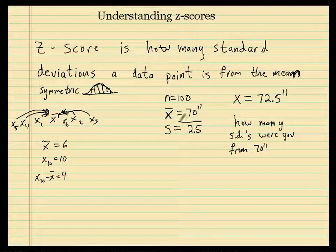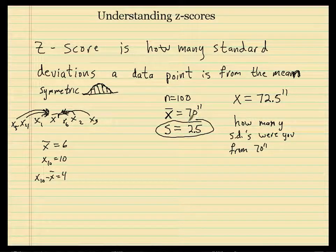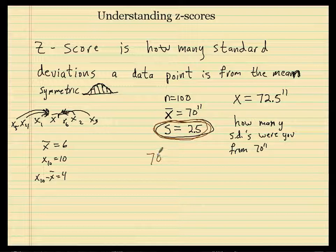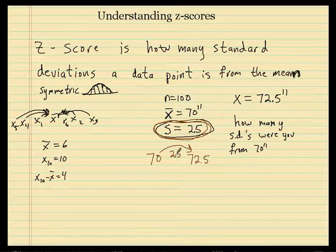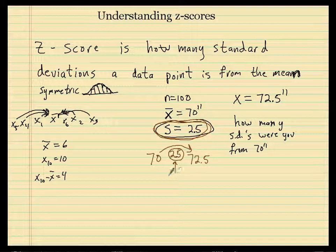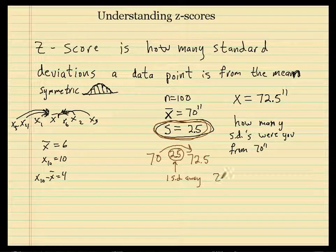So you have to ask yourself: how many standard deviations were you from 70? How many of these standard deviations? Well, if you take 70 and 72.5, to get from here to here it takes one standard deviation. So you're one standard deviation away. Your z-score would be equal to one.